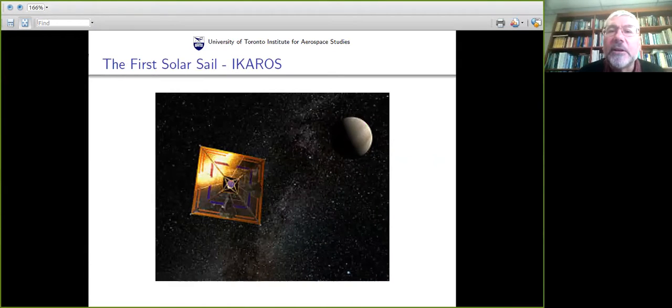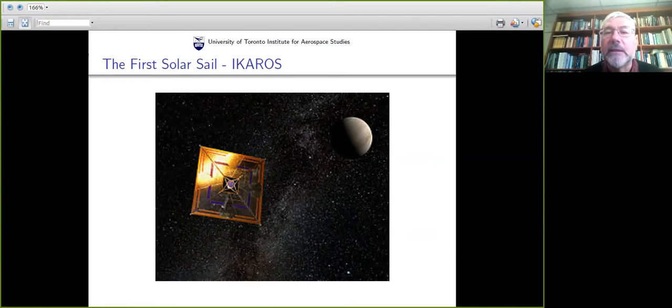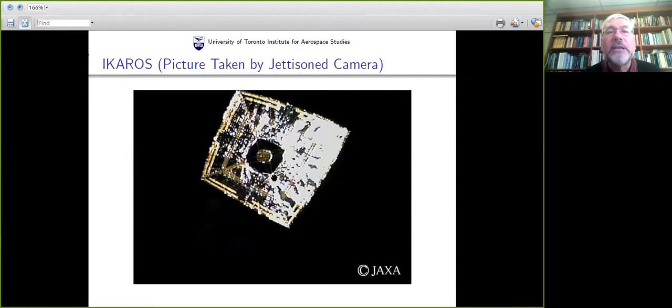The very first solar sail was launched about five years ago by the Japanese and was called Icarus. Here's an artist's depiction. It wasn't very big, about four meters by four meters, very thin. It spun to keep its shape - the centrifugal acceleration produced by the spinning sail caused it to stay nice and flat. They basically launched this in such a way that the sail would go to Venus. Since it was launched, it has arrived at Venus.